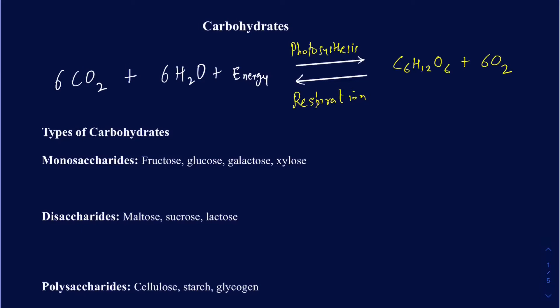Let's talk about the different types of carbohydrates. I'm just going to be briefly talking about what the different types are, and then we're going to be talking about those in details in a different video. The first one is monosaccharides, where you have only one sugar molecule. This is going to be the smallest sugar molecule, and you really can't break that down further into another smaller molecule.